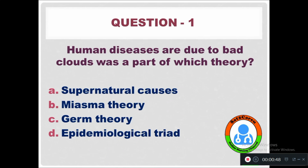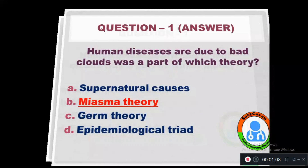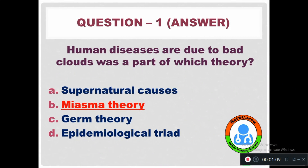Question 1: 'Human diseases are due to bad air' — this was part of which theory? Option A: Supernatural Causes Theory. Option B: Miasma Theory. Option C: Germ Theory. Option D: Epidemiological Triad. The right answer is Option B, Miasma Theory.